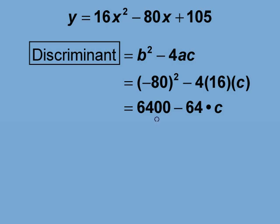Simplifying, we get 6400 minus 64c. In order for that to equal 0, then c needs to have a value of 100.